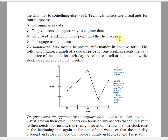Technical writers use visual aids for specific purposes. We will discuss them one by one. First is to summarize. Summarize means that you can present a very large amount of information in a concise form.